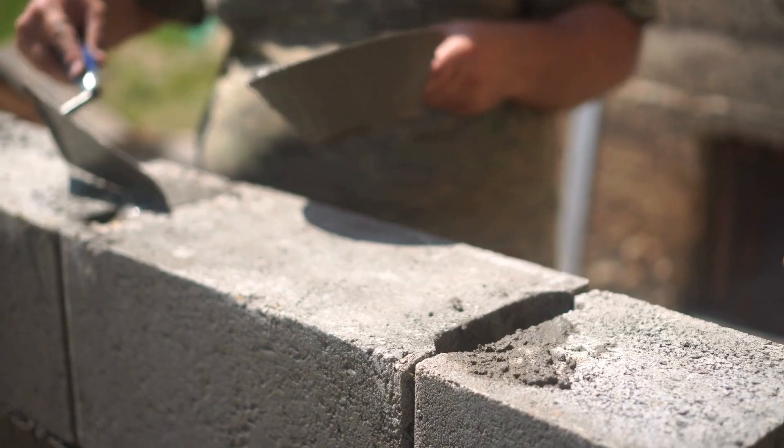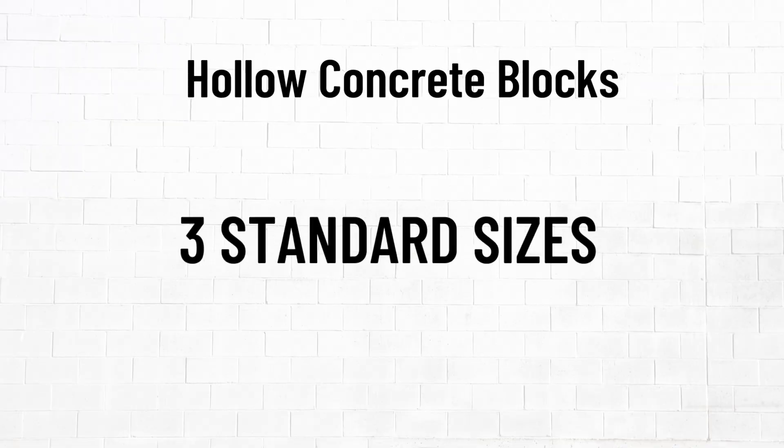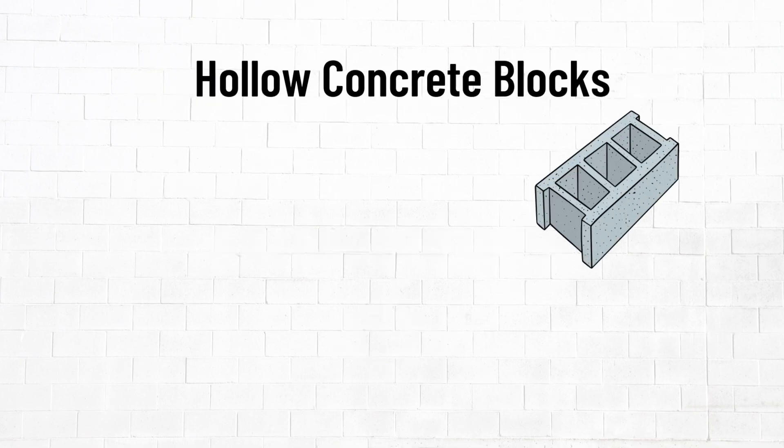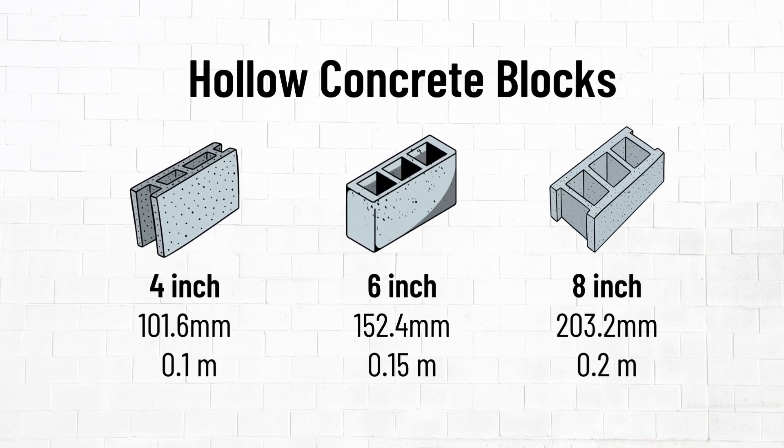Let's use concrete hollow blocks from Zambia as an example. These come in three standard sizes: 4 inch, 6 inch, and 8 inch.